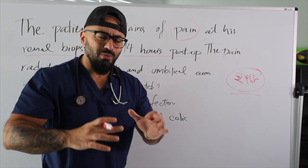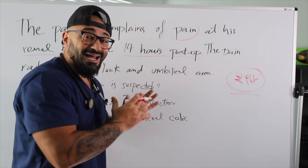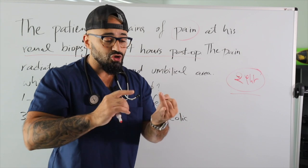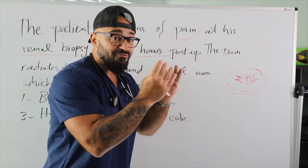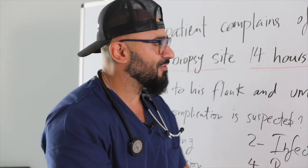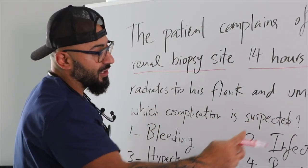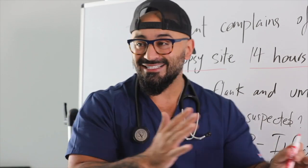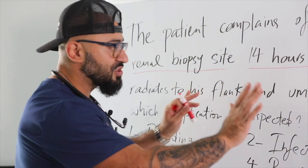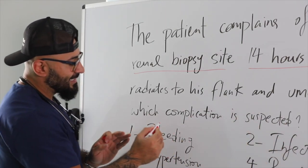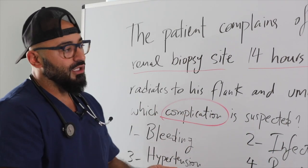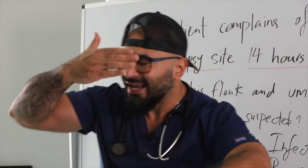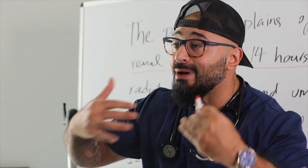The pain radiates from his flank to his umbilical area. The question doesn't say right or left kidney — that's totally fine. The keyword here is 'complication' — that's what I'm looking for. Now, if I close my eyes and rephrase the question in my own words: I've got a patient, 14 hours post renal biopsy, who is on a medical surgical unit with pain radiating to his flank and umbilical area. What complication am I suspecting?